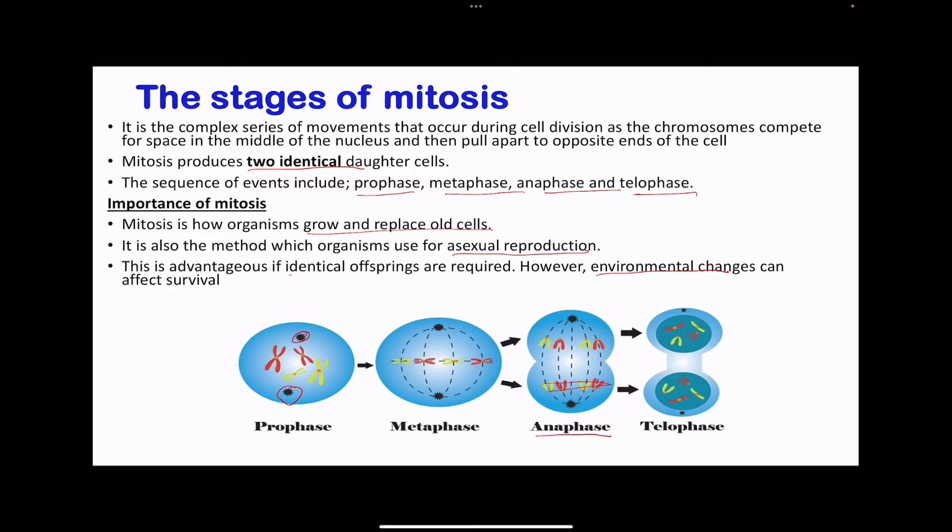In anaphase, the spindle microtubules pull the sister chromatids apart by dividing the centromere. Spindle fibers are made up of overlapping microtubules of contractile fibers, and these contract using ATP in order for the chromatids to be moved to the opposite sides of the cell.